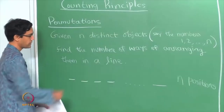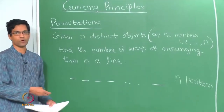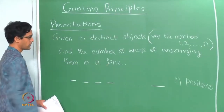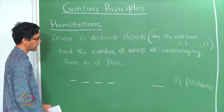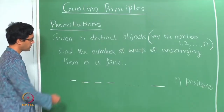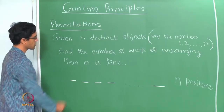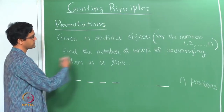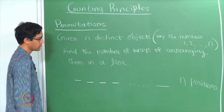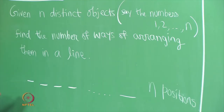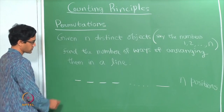We think of this as the following problem: you are given n positions in a straight line, and in each position or box, what you want to do is place one of these n objects. The number of ways of doing this is given by a usual counting principle sometimes called the product principle.